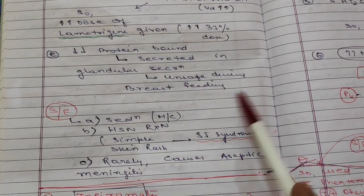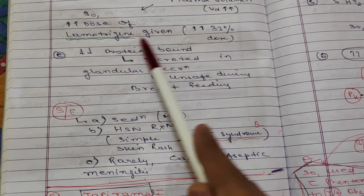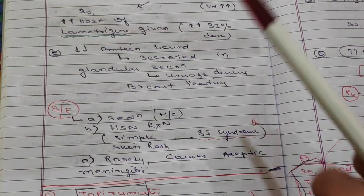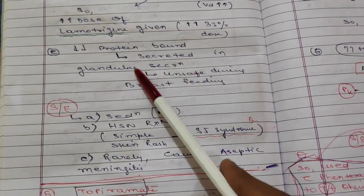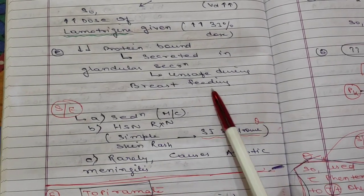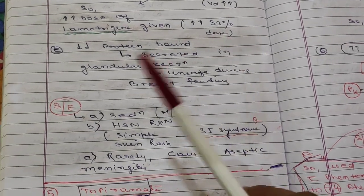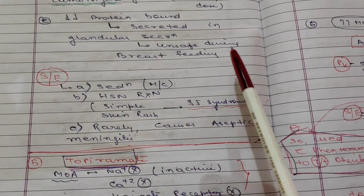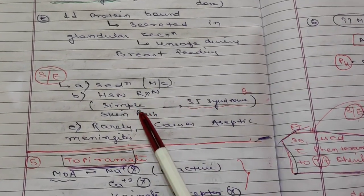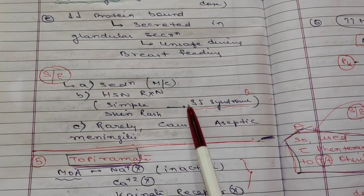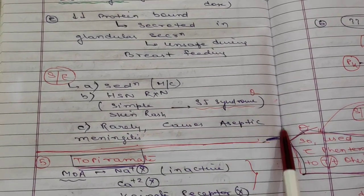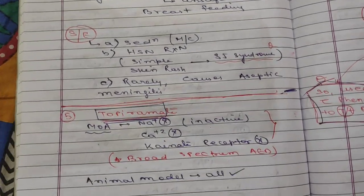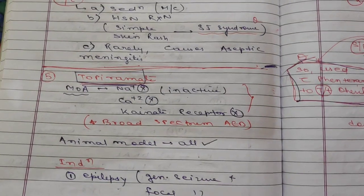Lamotrigine has less protein binding capacity, so it is secreted into glomerular filtration and is therefore unsafe during breastfeeding. Because of the less protein binding, its size will be smaller and it can be secreted into breast milk. Side effects include sedation (most common), hypersensitivity reactions leading to Stevens-Johnson syndrome, and rarely aseptic meningitis.